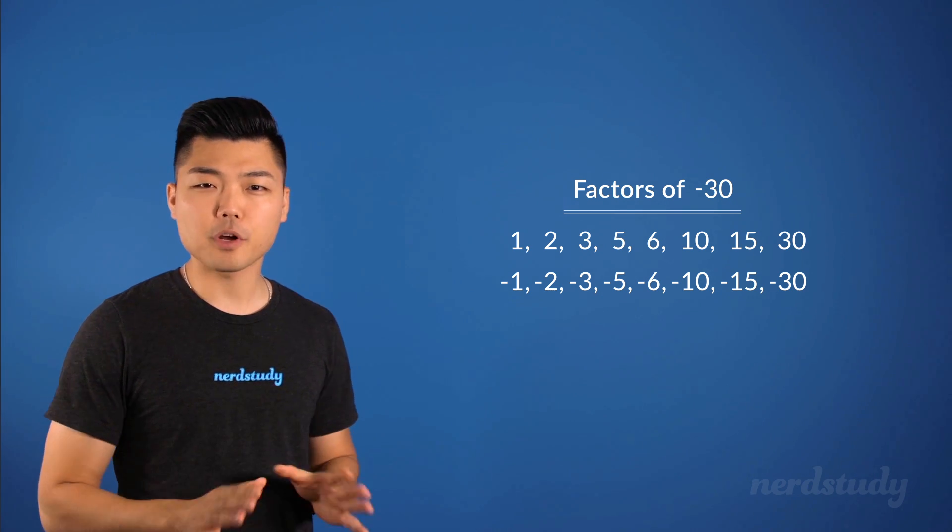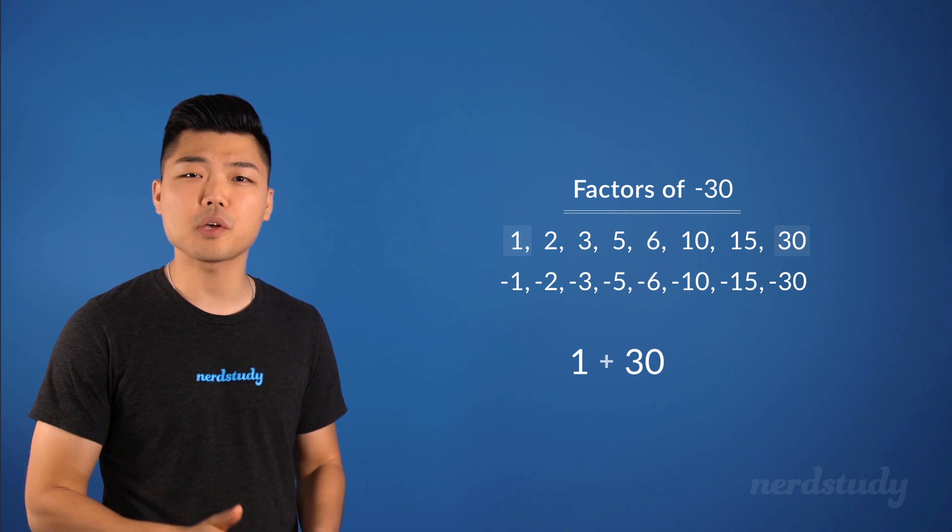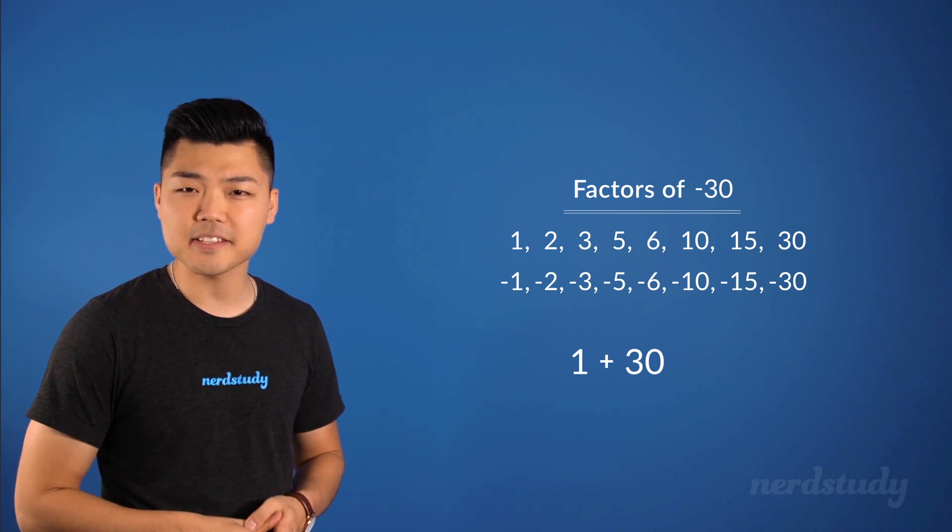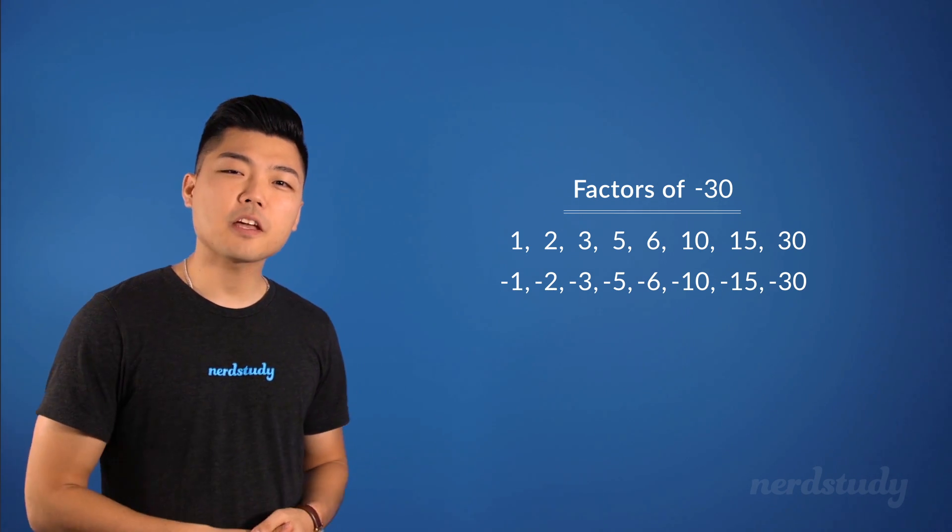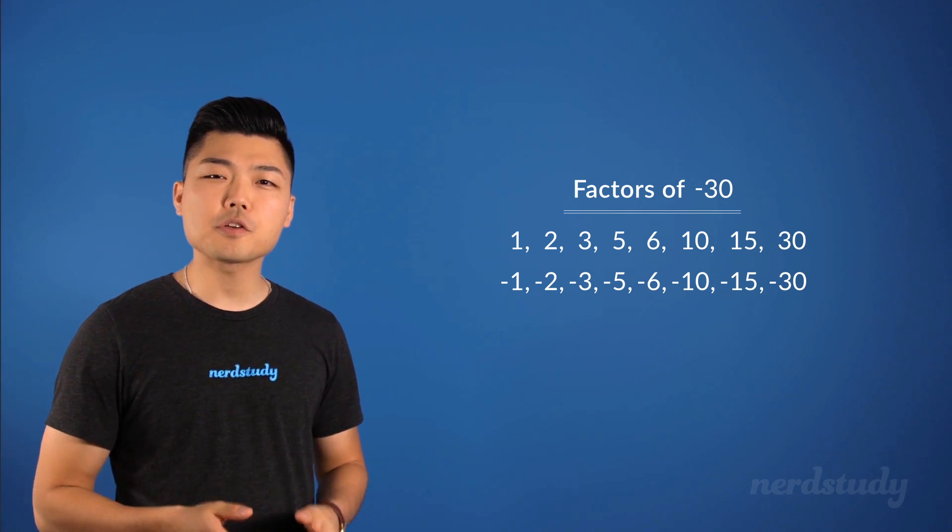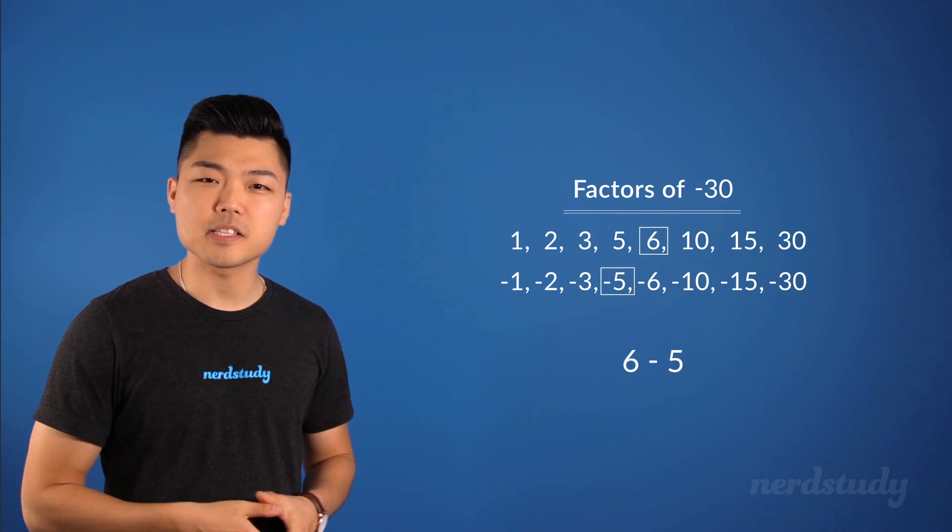There's no way, regardless of which factors become negative and which factors become positive, that 1 and 30 would add together to equal negative 1. Now, a difference of negative 1 occurs when our factors are 1 away from each other, which would obviously be 5 and 6.